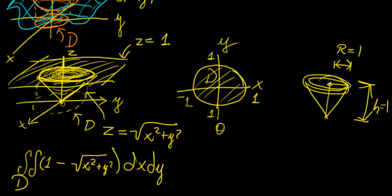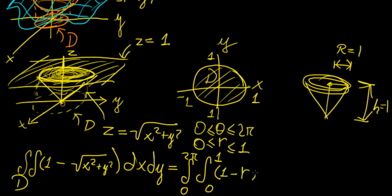Theta goes from 0 to 2π, and r goes from 0 to 1. Let's transform this integral. From 0 to 2π, 0 to 1, we have square root of r squared, which is just r. So this becomes 1 minus r, and the element of integration is r dr dθ.